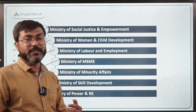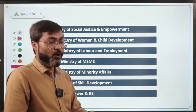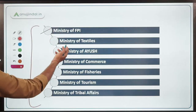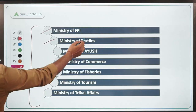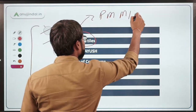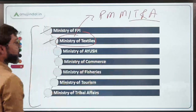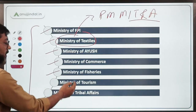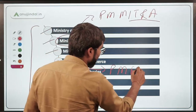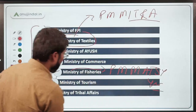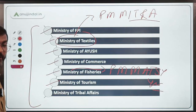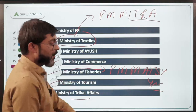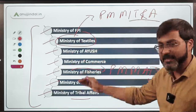Ministry of Skill Development covers Pradhan Mantri Kaushal Vikas Yojana 3.0, recently launched. Ministry of Power and Renewable Energy covers UJALA Yojana, SAUBHAGYA, and AJAY scheme. Ministry of Food Processing and Ministry of Textiles — PM MITRA was launched recently, so a question can be expected from it. Ministry of AYUSH covers National AYUSH Mission. Ministry of Commerce, Ministry of Fisheries covers Pradhan Mantri Matsya Sampada Yojana. Ministry of Tribal Affairs is also important.